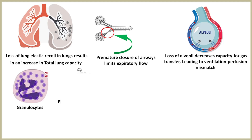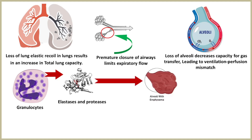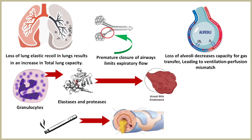Granulocytes can release elastases and proteases. An imbalance between protease and antiprotease activity is a causative factor in the development of emphysema. Mucus gland hypertrophy in the larger airways is thought to be a direct response to persistent irritation resulting from the inhalation of cigarette smoke. The smoke has an adverse effect on surfactant, favoring over-distention of the lungs.